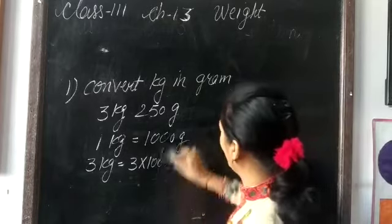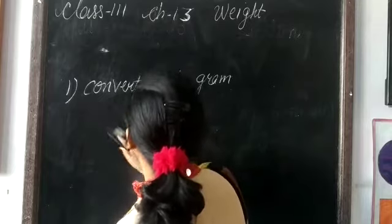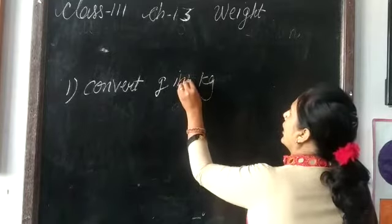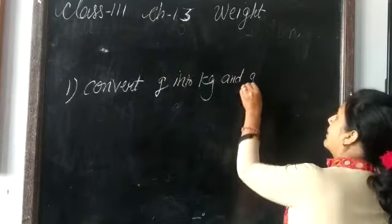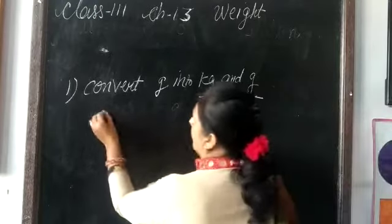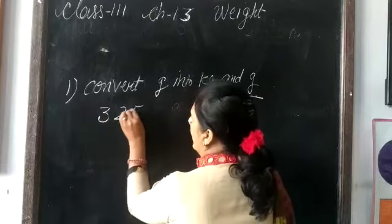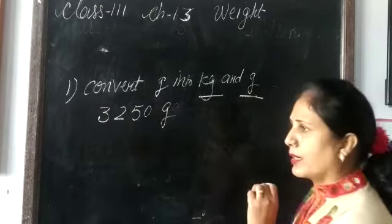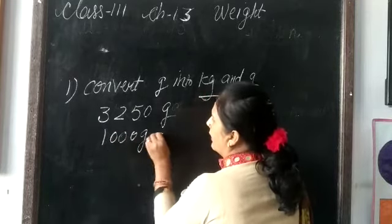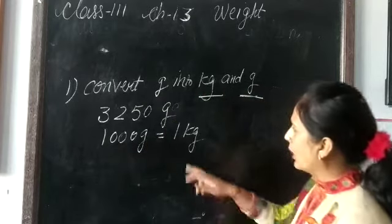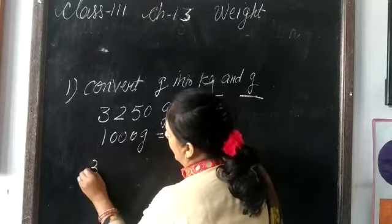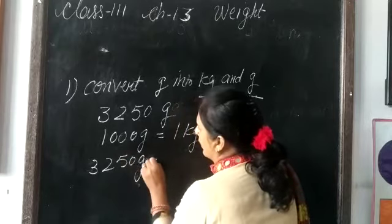Next: convert gram into kilogram and gram. We will convert gram into kilogram and gram. Suppose you are given 3250 grams. As I told you, how many grams are in 1 kilogram? 1000 grams in 1 kilogram. So 3250 grams is equal to...